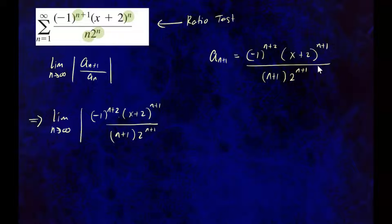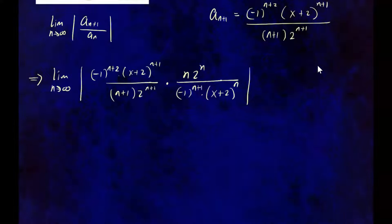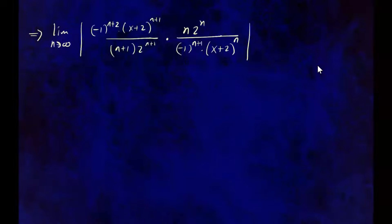Dividing by a sub n is the same as multiplying by its reciprocal. So that gives us n times 2 to the n over negative 1 to the n plus 1 times x plus 2 to the n. Now we do a lot of simplification before we can take the limit.